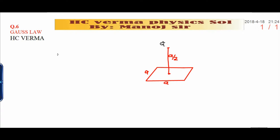This is a horizontal square surface of edge A as shown in the figure. Find the flux of the electric field through the square surface.